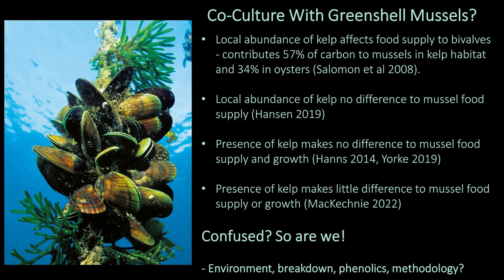New Zealand has an enormous opportunity. We have over 15,000 hectares of consented farm space for mussels in New Zealand, and around 7,000 of that is already developed. So if we could culture seaweeds with our green shell mussel, we could have two for the price of one benefit from this perfect marriage.